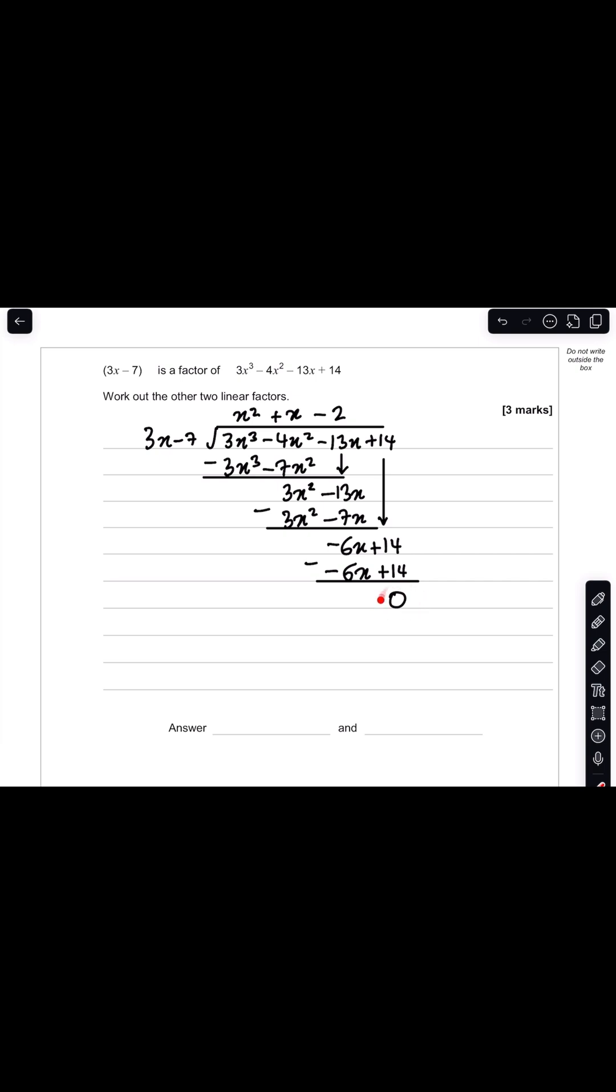So the number that you are left with here represents your remainder. Now because our remainder is 0 we know that our working is correct, because if 3x minus 7 is a factor of this cubic expression, it means when you divide this cubic expression by this linear expression, your remainder must be 0.